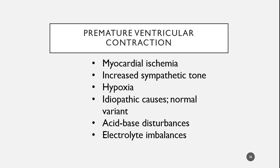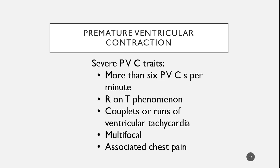It can come from electrolyte imbalances — particularly an imbalance in sodium or potassium within the heart. Some of the things we're going to be concerned about when looking at our patient: if we have more than six PVCs a minute, so if we have six PVCs on a six-second strip, that gives us cause for concern.